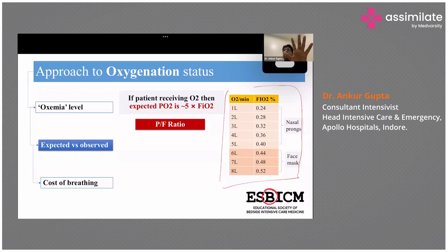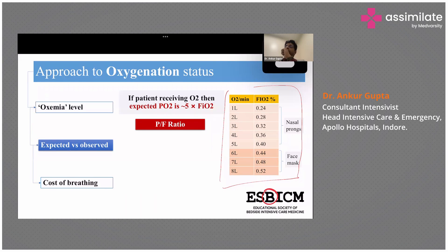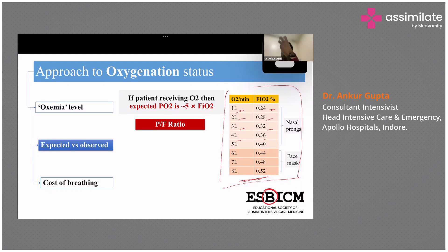When on a ventilator, the FiO2 is defined directly. But when giving oxygen by flow meter — 1 liter, 2 liters, 3 liters — how do we convert to FiO2? On room air it's 21%; 1 liter = 24%, 2 liters = 28%, 3 liters = 32%, 4 liters = 36%, with 4% increments per liter. Above 8 liters it doesn't increase much unless you use a reservoir bag, where it can go up to 60–80%. So using this conversion you can calculate the expected PO2.